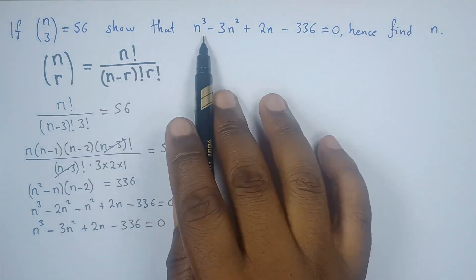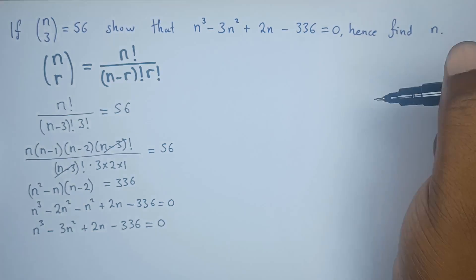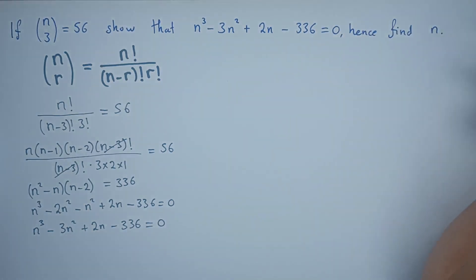Those were just what to show for the first part. To find the value of n, we're supposed to use the best method since it's a polynomial: trial and error.